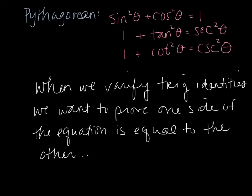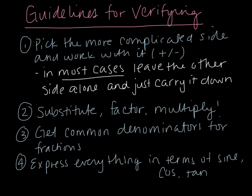When we verify trig identities, we are given an equation that has trig functions on both sides, and what we want to do is prove that one side is equal to the other. I have a list of steps to follow — some guidelines for verifying. These are general guidelines, not applied to every single case, but in most cases you want to pick the more complicated side and work with it so that you can bring it down to the less complicated side. Generally speaking, this is going to be sides that use addition and subtraction, not the sides that use multiplication.